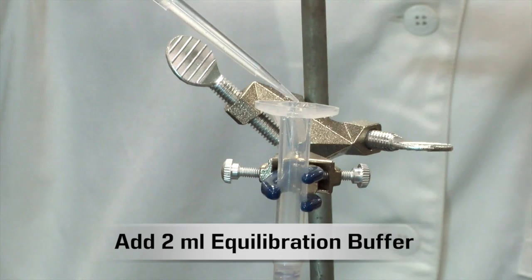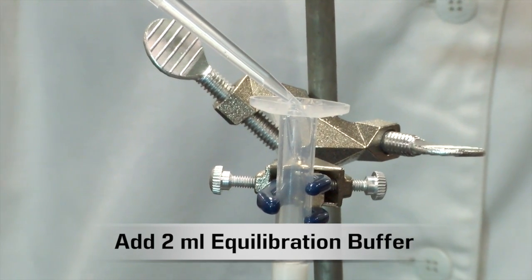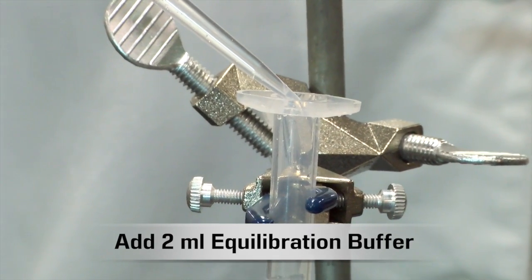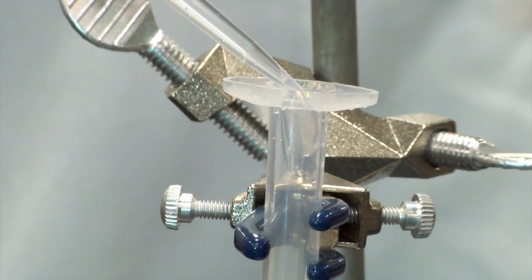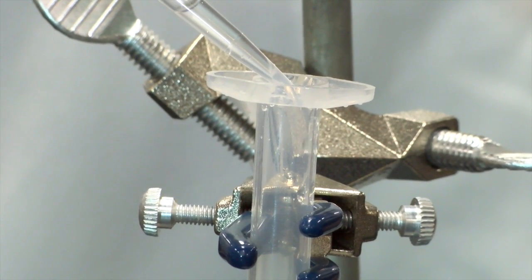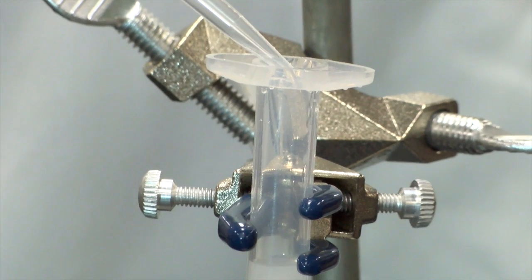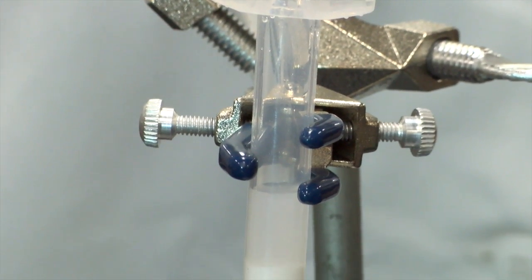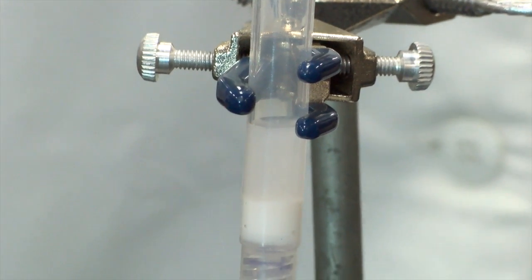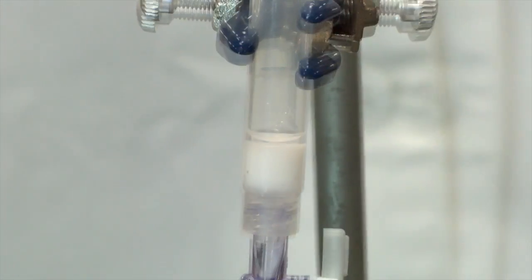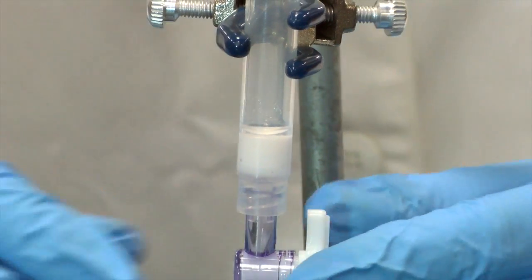Slowly add 2 mL of equilibration buffer to the wall of the column near the top so that the resin bed will not be disturbed. The equilibration buffer ensures that the resin beads will be at the same high salt concentration as the protein sample. Allow the buffer to flow through. Be sure to close the valve when the liquid is just above the resin bed.